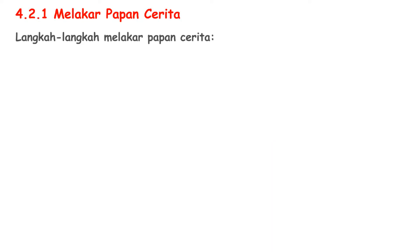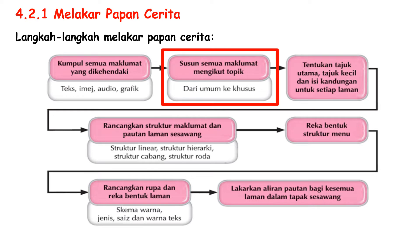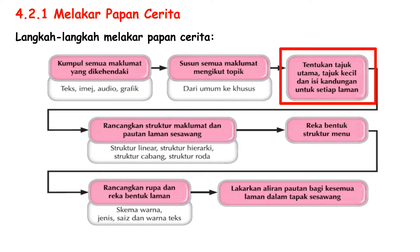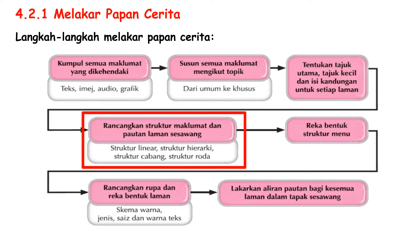The steps to draw a Papan Cerita are as below. 1. Gather all the required information, for example text, images, audio and graphics. 2. Organise all information by topic, from general to specific. 3. Specify the main title, subtitle and content for each page. 4. Plan the structure of maklumat and pautan Laman Sesawang, for example structure linear, structure cabang, structure roda or structure hierarchy.